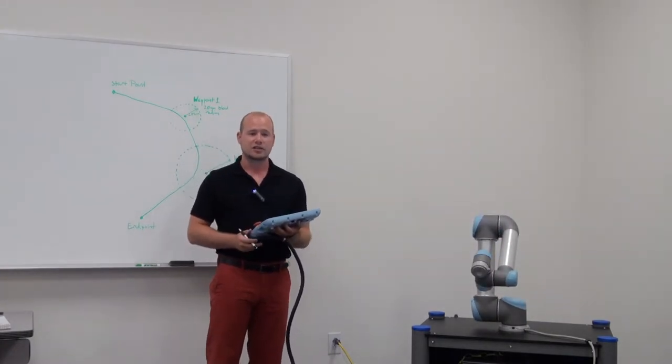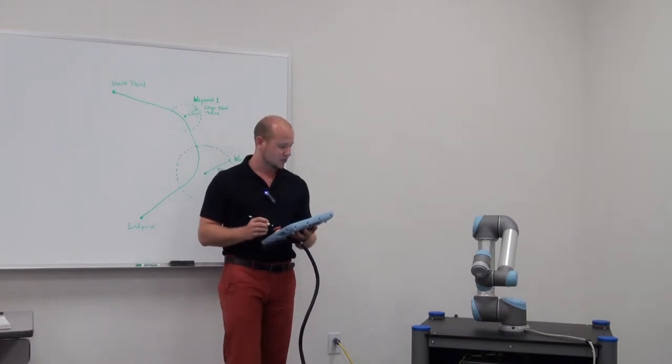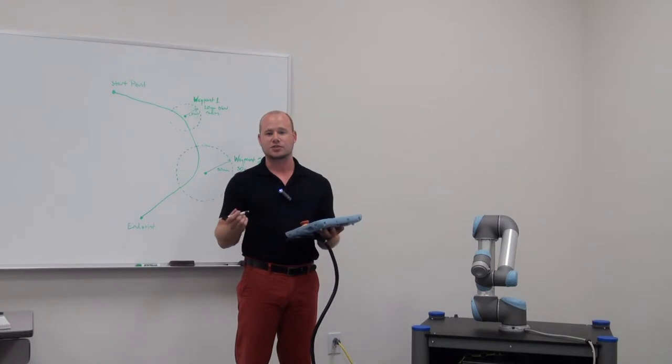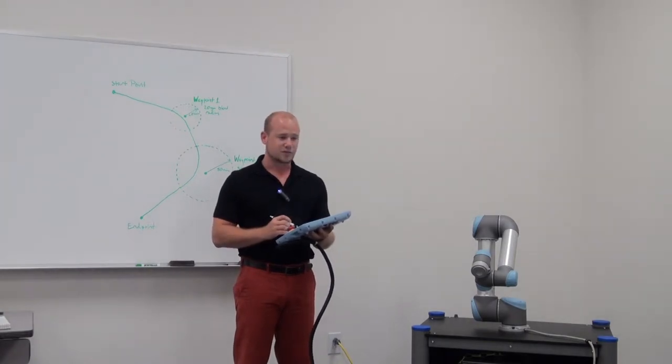Next, let's look at move L. The L stands for linear. So the tool center point will move between its points in a linear fashion or a straight line. This is good for when you need to move around something or trace an object.